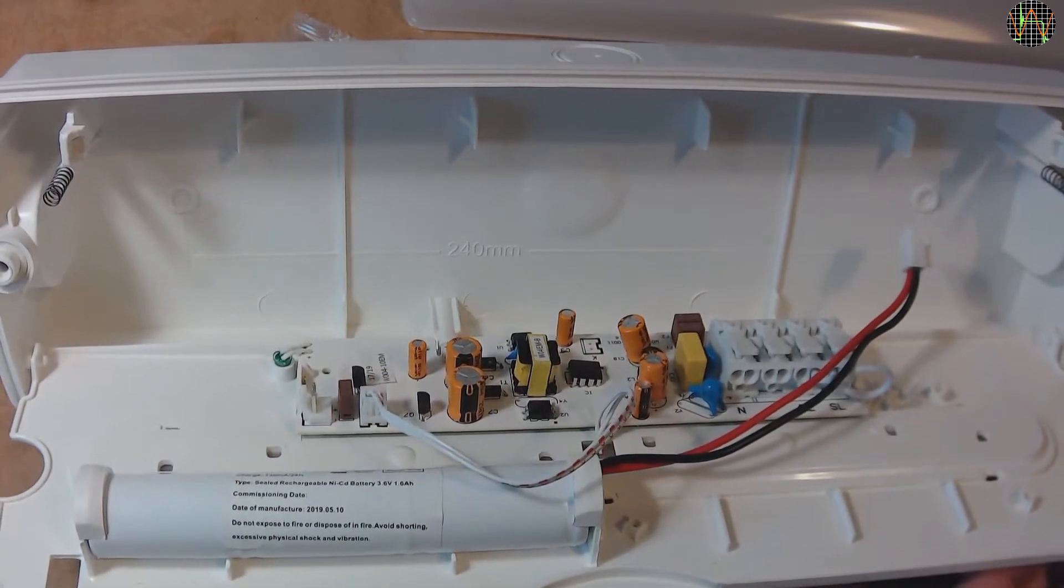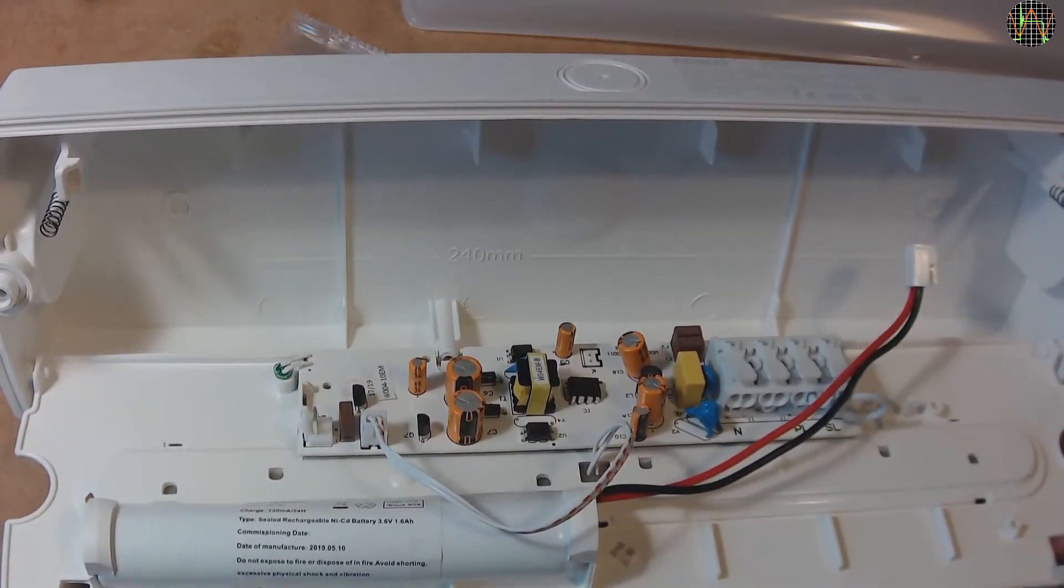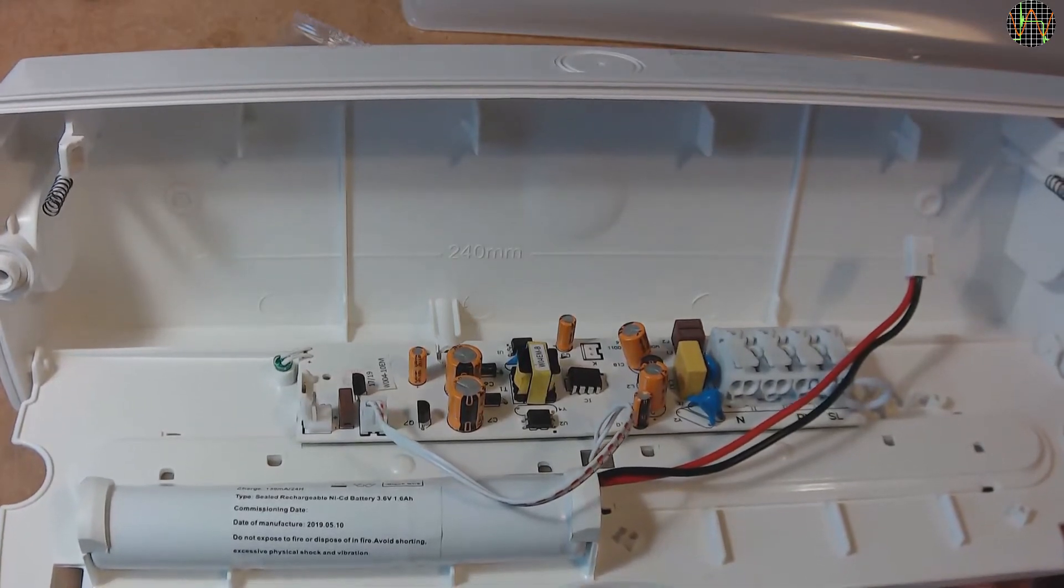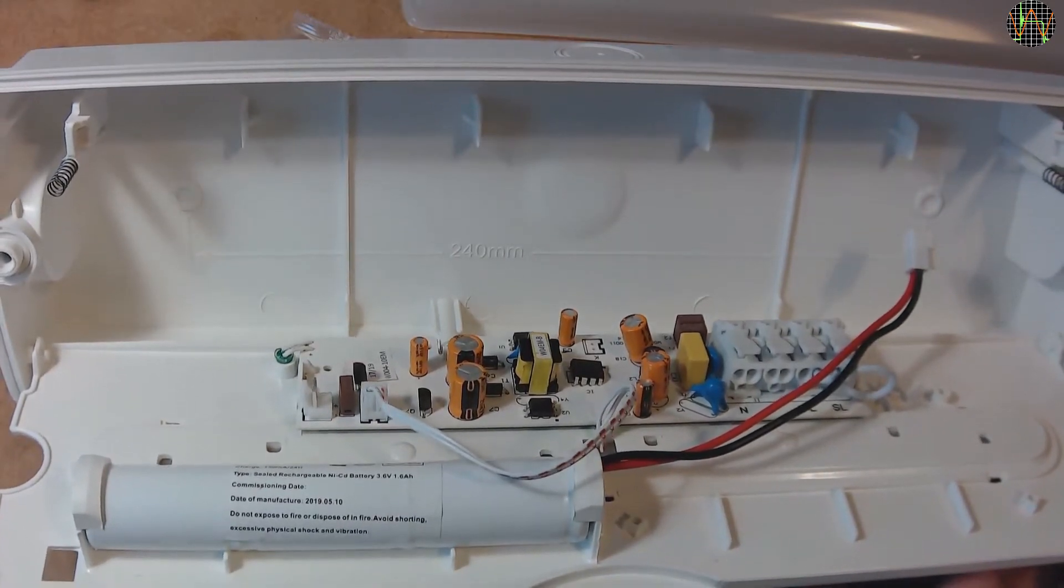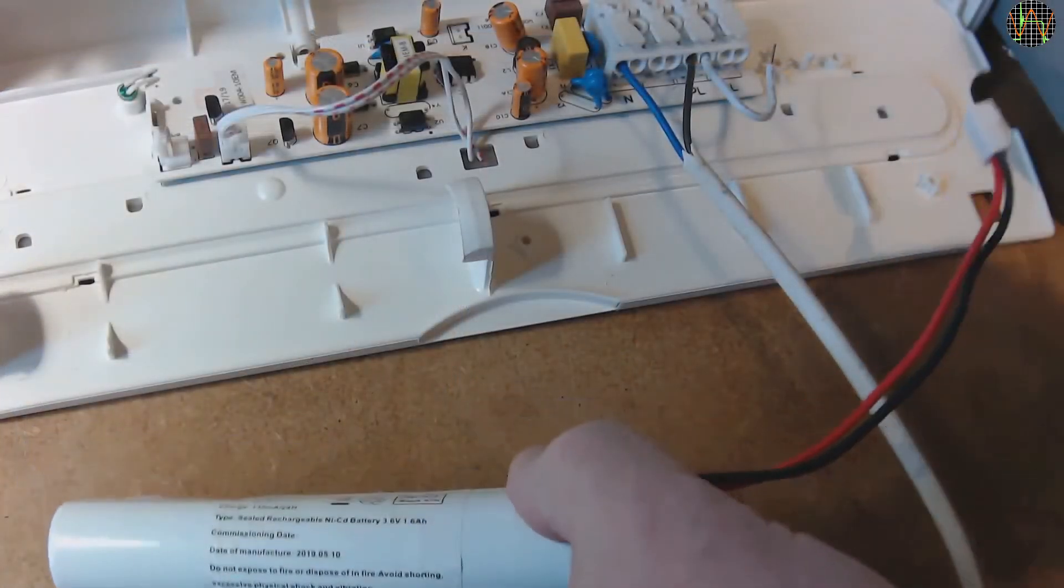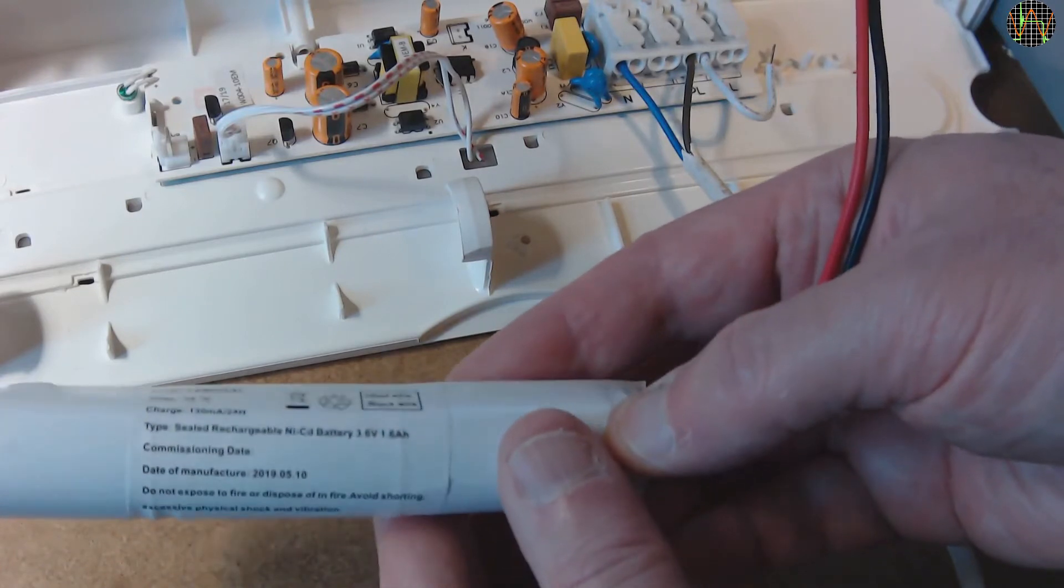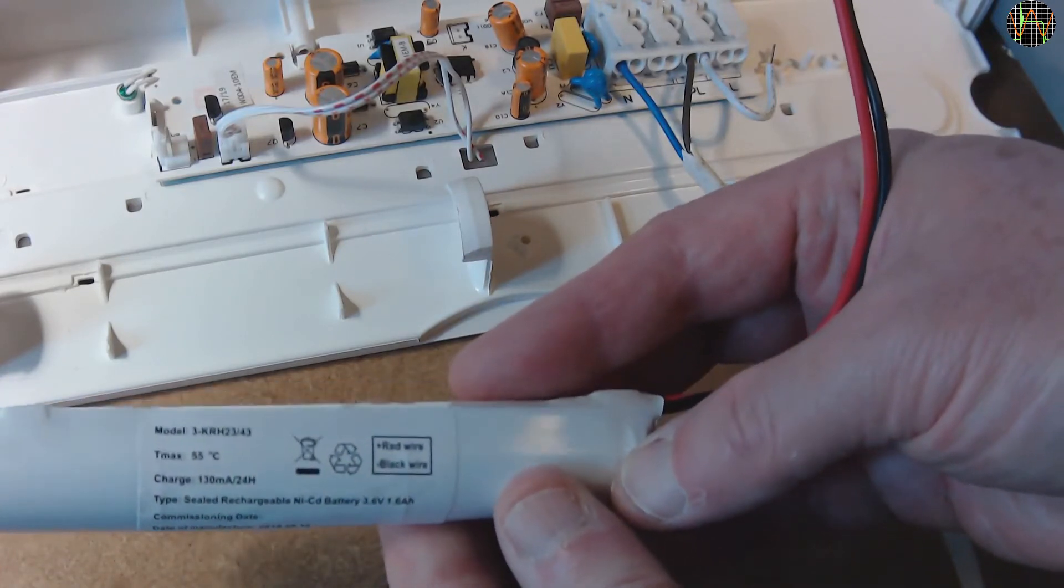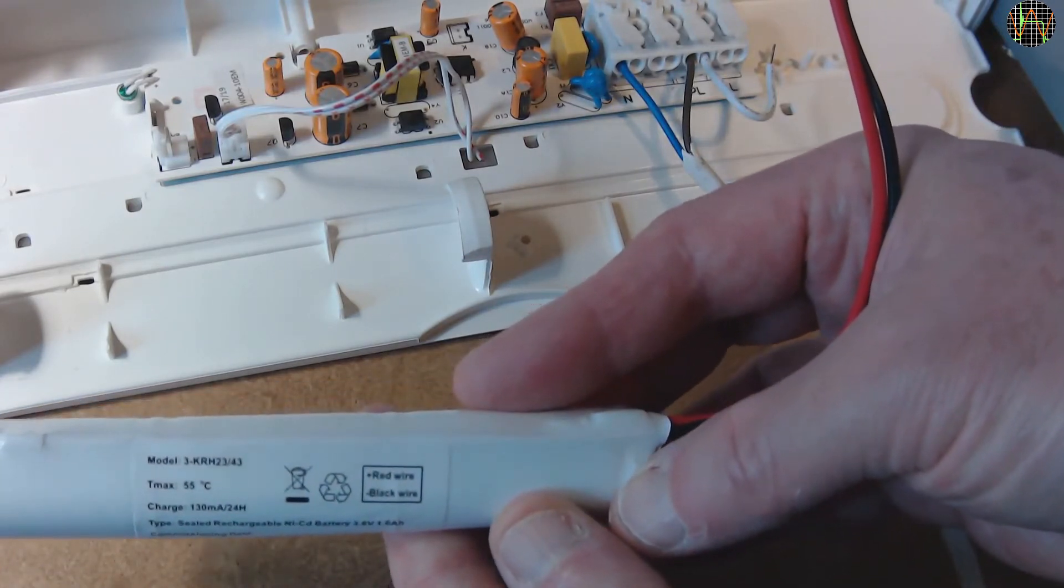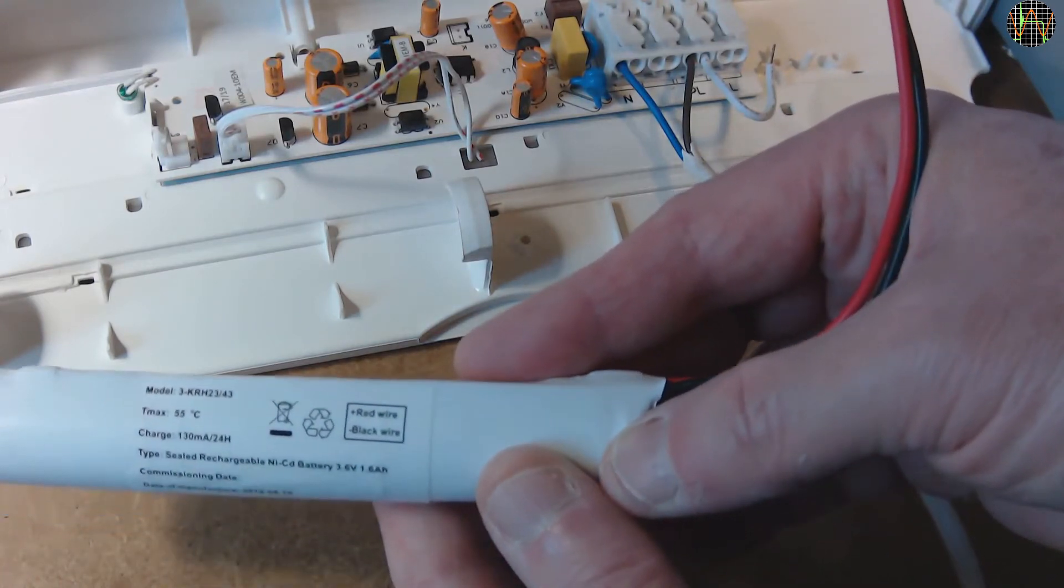There is the circuit board and of course the battery. The battery cable is disconnected. Obviously this was done by the manufacturer to ensure it doesn't get discharged accidentally. Before plugging it in, a closer look at the battery. It is a nickel-cadmium 3-cell battery for 3.6V 1.6Ah, manufactured in May 2019, so about 6 months ago. Its model number is 3-KRH23-3-43.